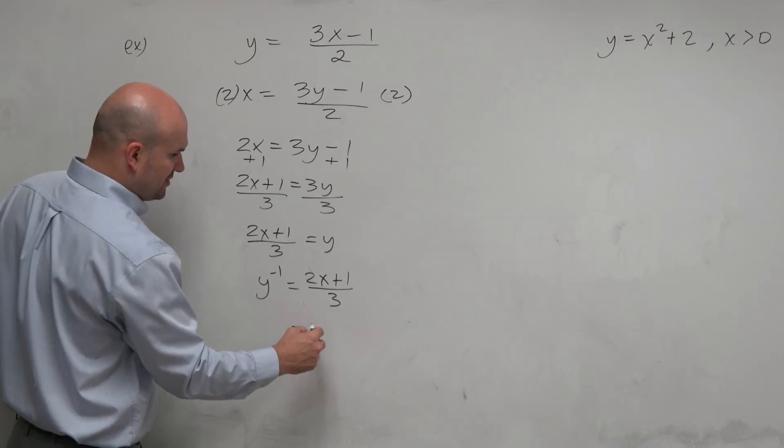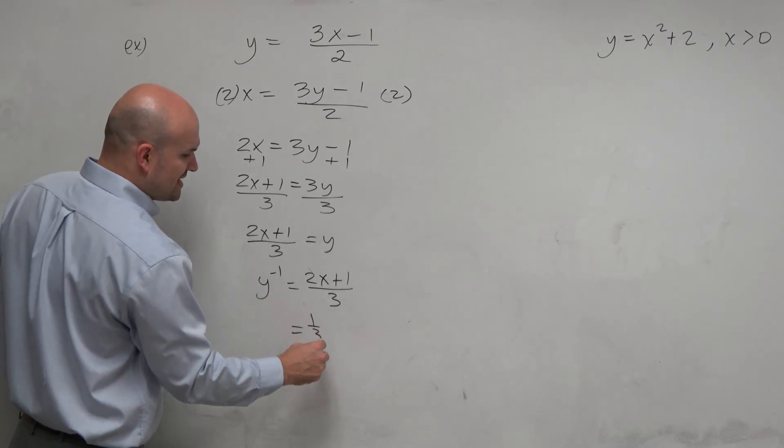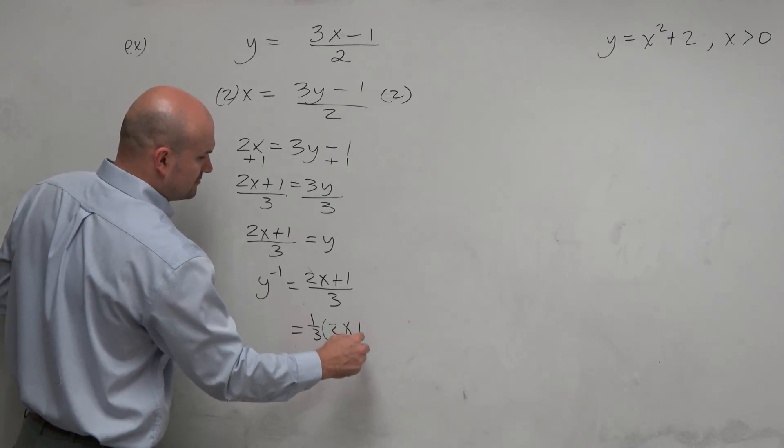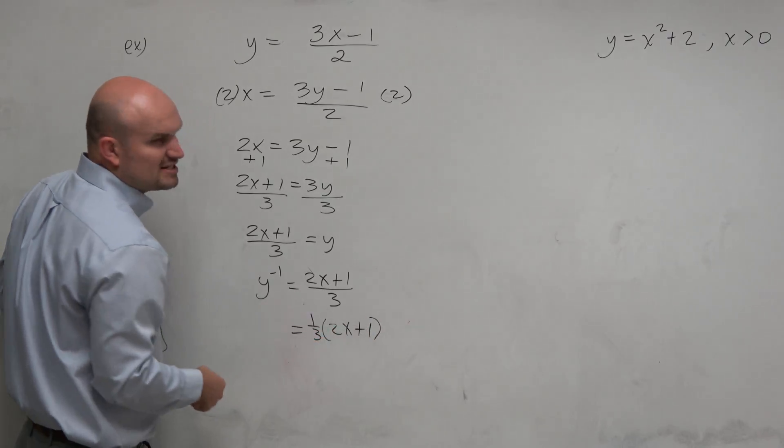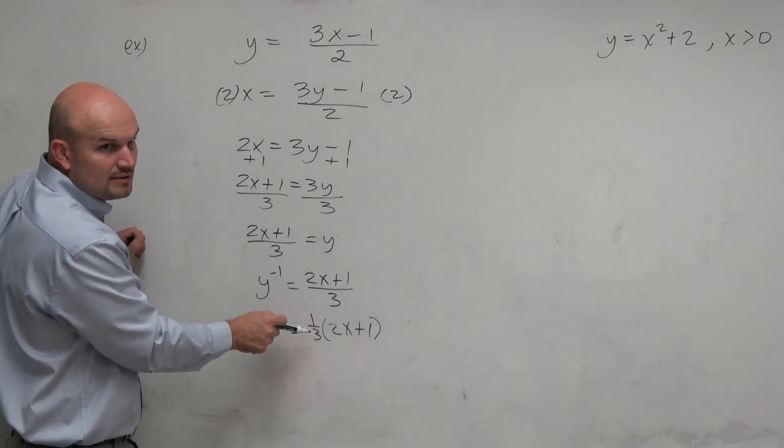You could divide the 3 into both of those. Actually, you could take the 3 in front and rewrite it as a fraction. I'm just giving you guys some different representations. Wouldn't you guys agree dividing by 3 is the same thing as multiplying 1 third? Yes. OK.